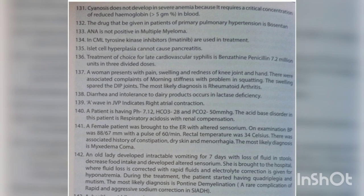A female patient was brought to the ER with altered sensorium. On examination, BP was 88/67 mmHg with a pulse of 60 per minute, rectal temperature was 34°C. There was associated history of constipation, dry skin, and menorrhagia. The most likely diagnosis is myxedema coma.